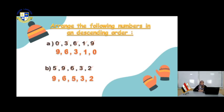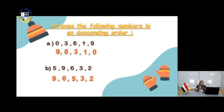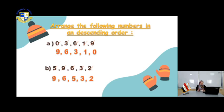The next one: we will arrange in descending order. Descending — the dinosaur. The dinosaur is always the big, so you search for the bigger number. You have 0, 3, 6, 1, and 9. Where is the bigger number? Yes, it's 9. So: 9, 6, 3, 1, 0.